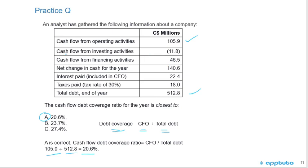All that extra information was red herring meant to confuse you. If you have the formula memorized — CFO divided by total debt — it's a straightforward calculation in under 90 seconds. Without the formula, you risk going down the wrong road. Confidence in your formulas is key.